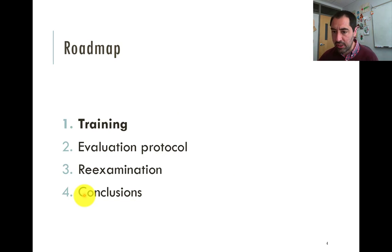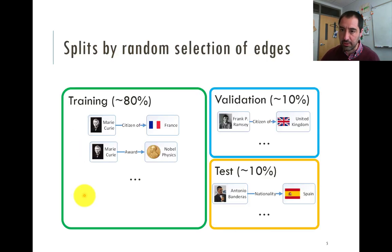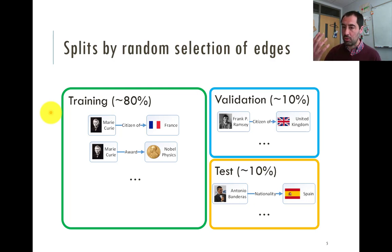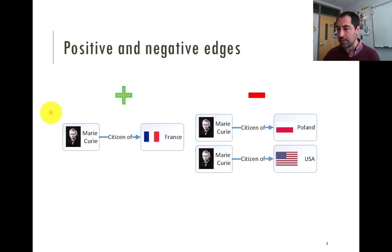Let's talk about how the training works on these machine learning models. There are a set of knowledge graphs usually available, and these are already split — training, validation, and test, usually 80%, 10%, and 10%. These splits are constructed by random selection of edges. Once this is done, the training happens using positive and negative edges. Positive edges are those that are actually in the graph, and negative edges are those that are not.